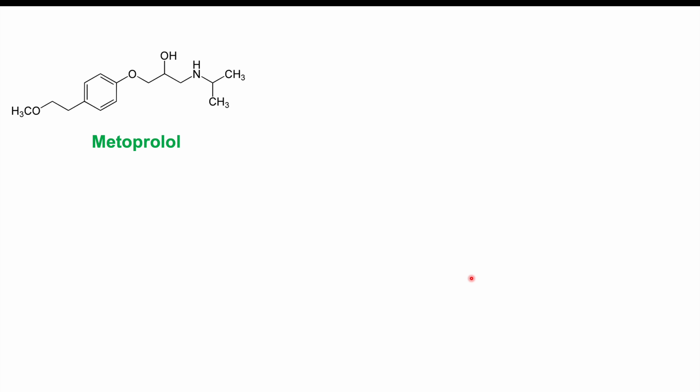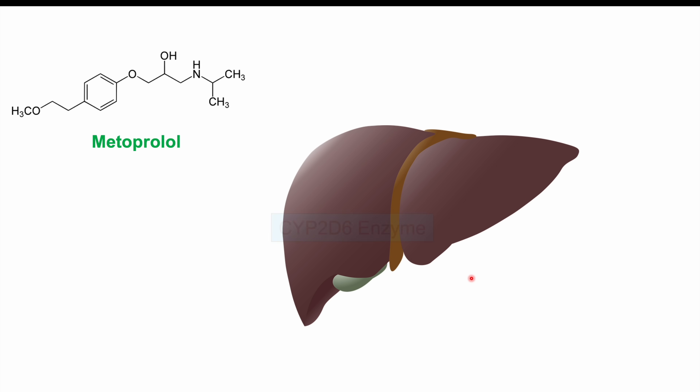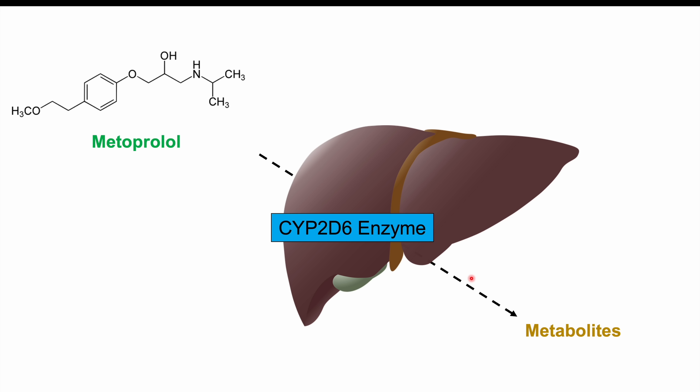Before talking about what to avoid, it's important to understand how metoprolol is metabolized. Metoprolol is metabolized in the liver by an enzyme called CYP2D6, which breaks it down into its metabolites. Metoprolol has a three-to-four-hour half-life. Understanding this enzyme is key to understanding why certain things can interact with metoprolol to increase or worsen side effects.